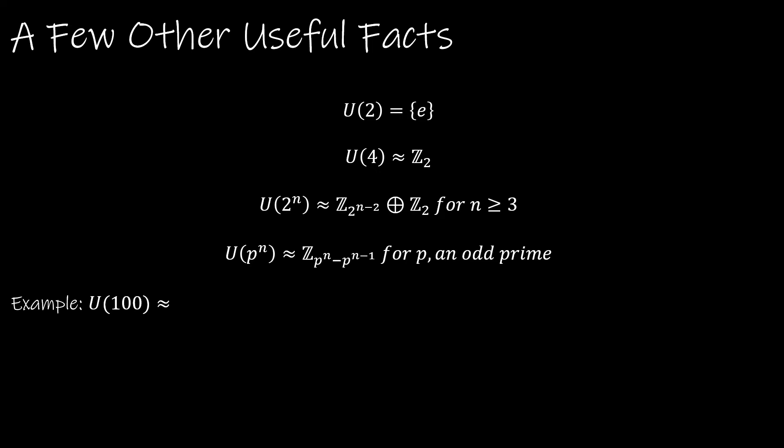So why would these other useful facts actually be useful? Well, let's take a look at U(100). We already know that we can do the prime factorization and say that this is the same as U(2^2) external direct product with U(5^2). So what do I do now? Well, U(2^2) is U(4), and we know that that's isomorphic, in fact, to Z_2.